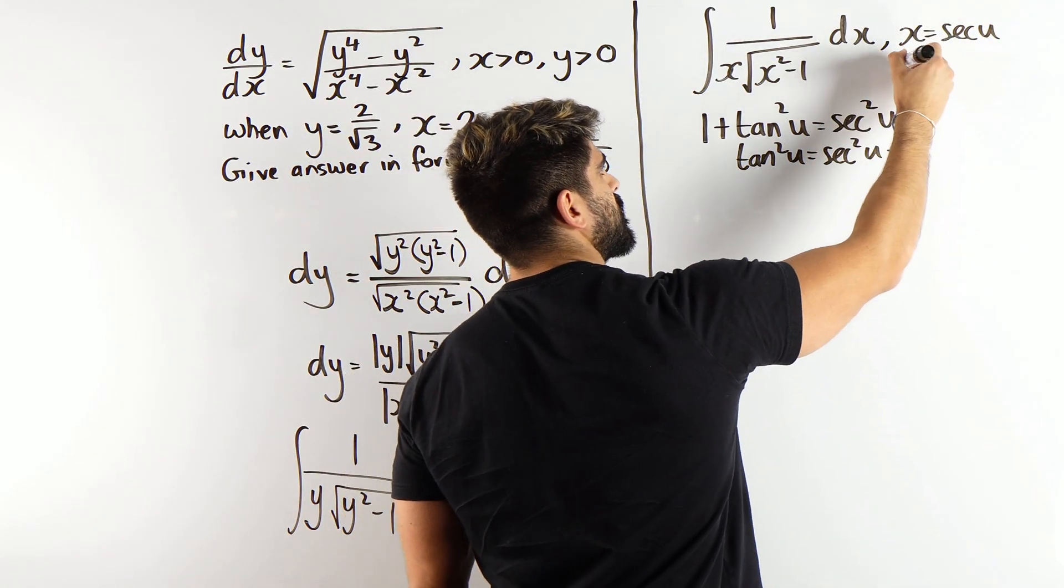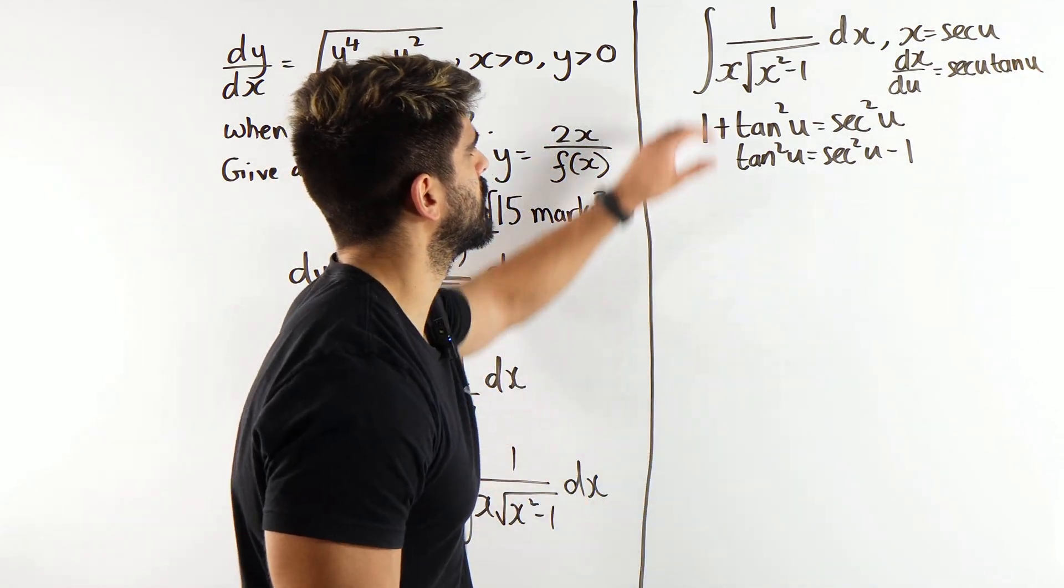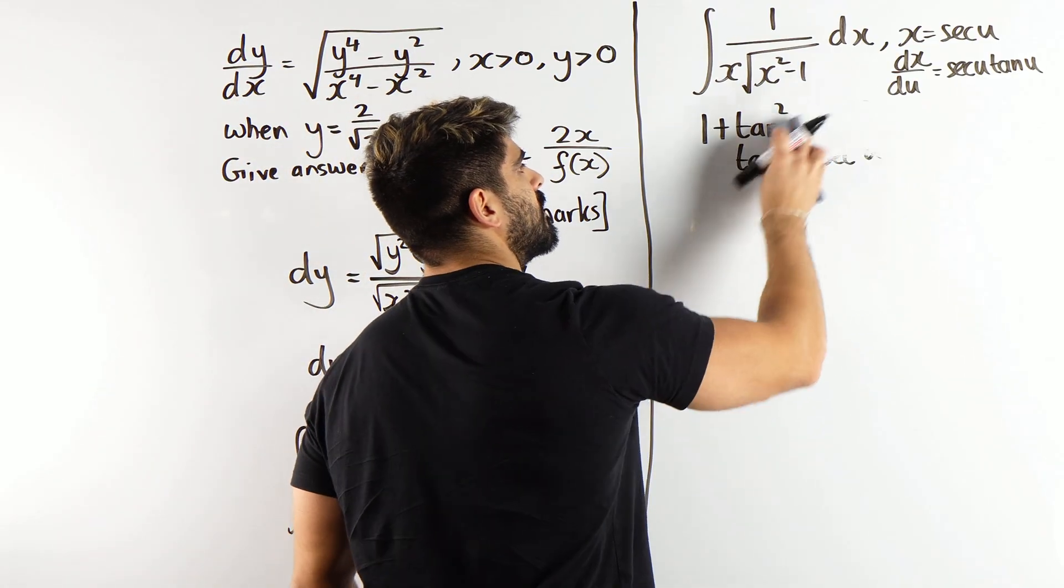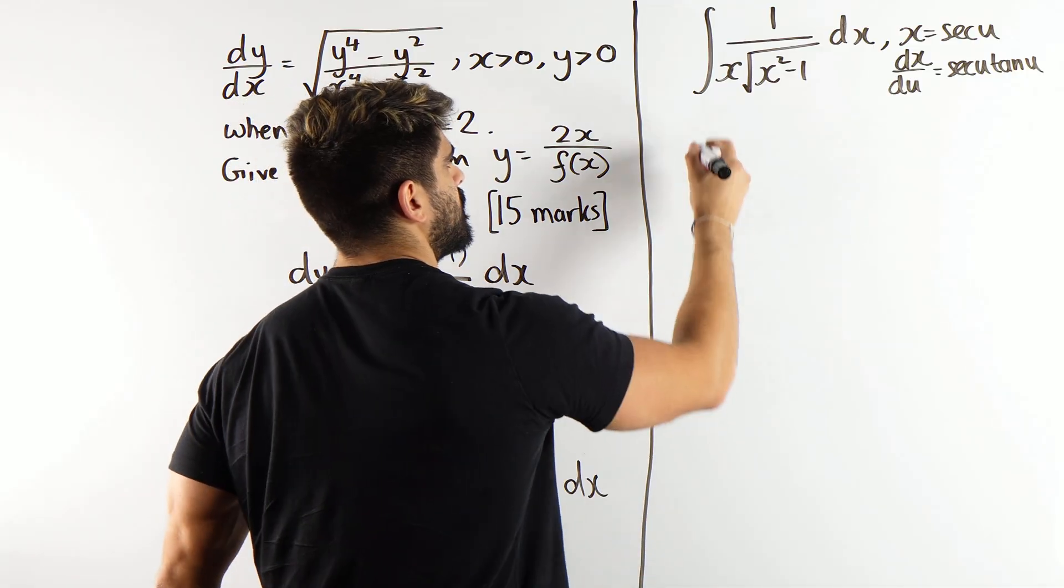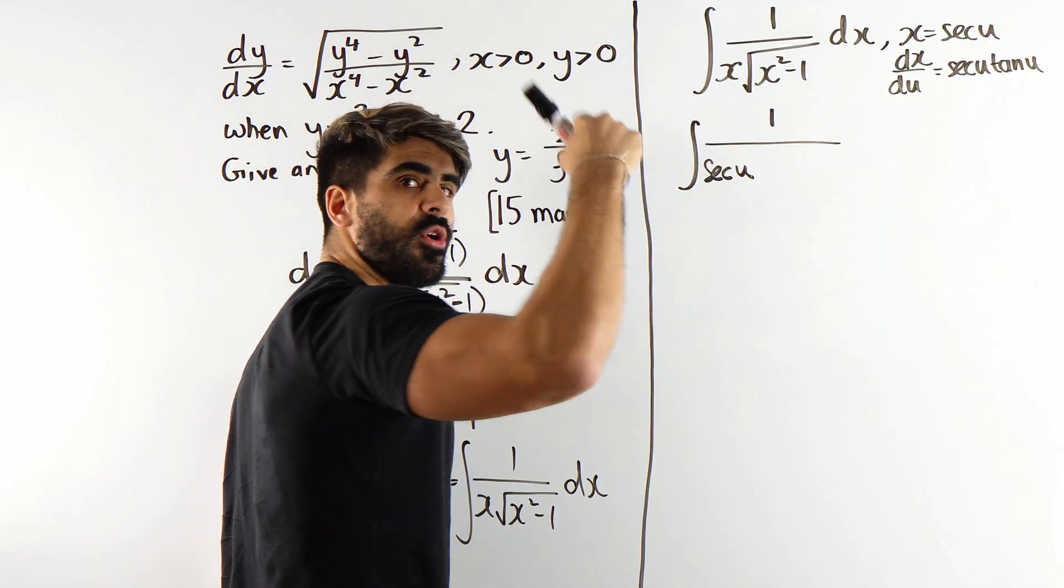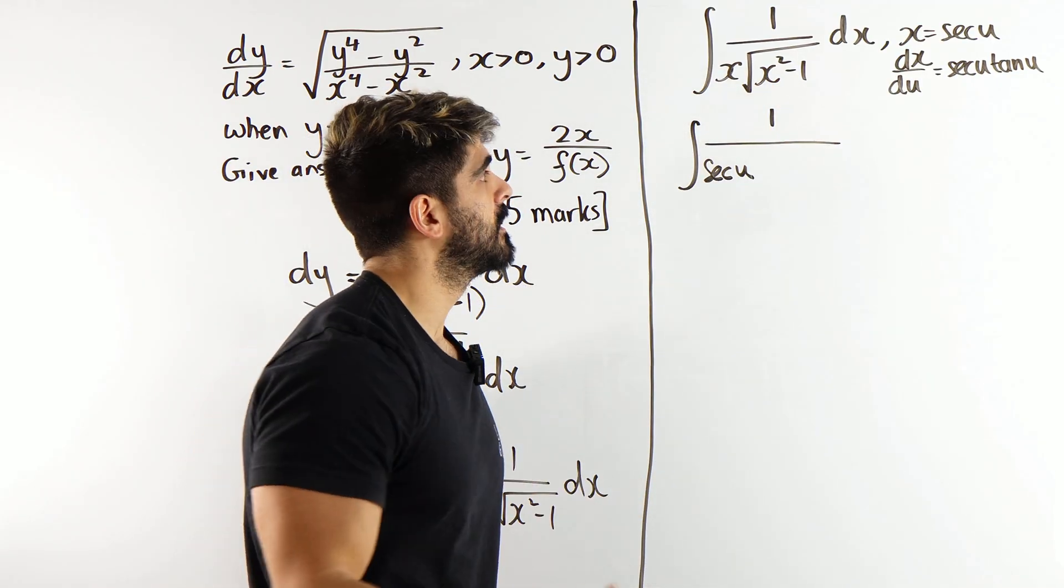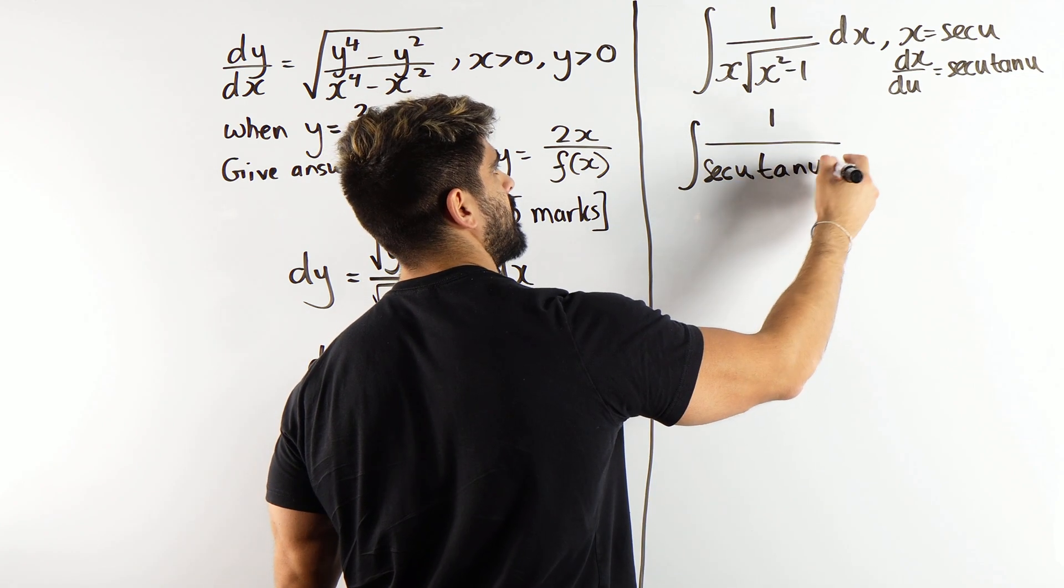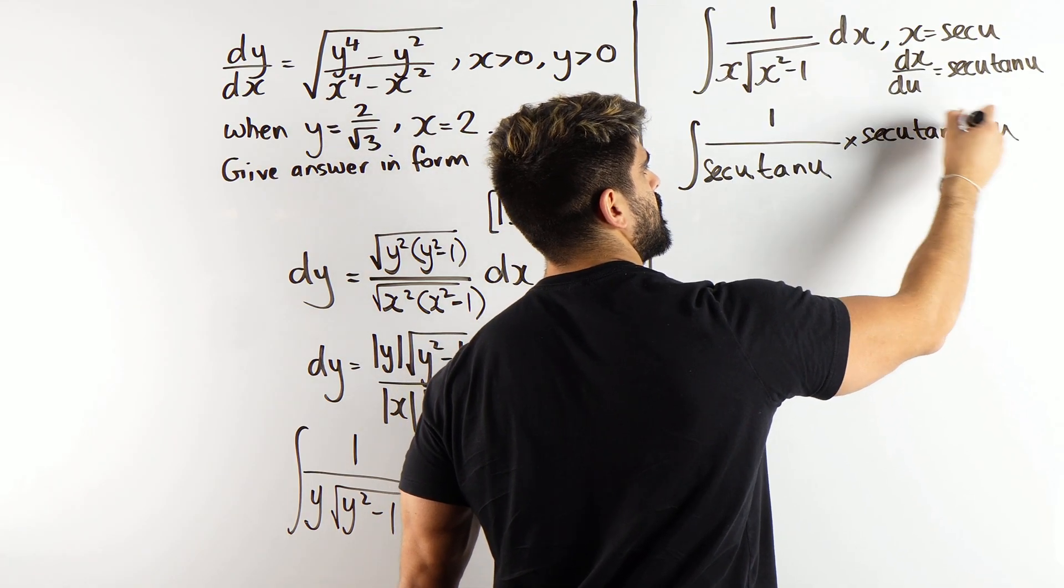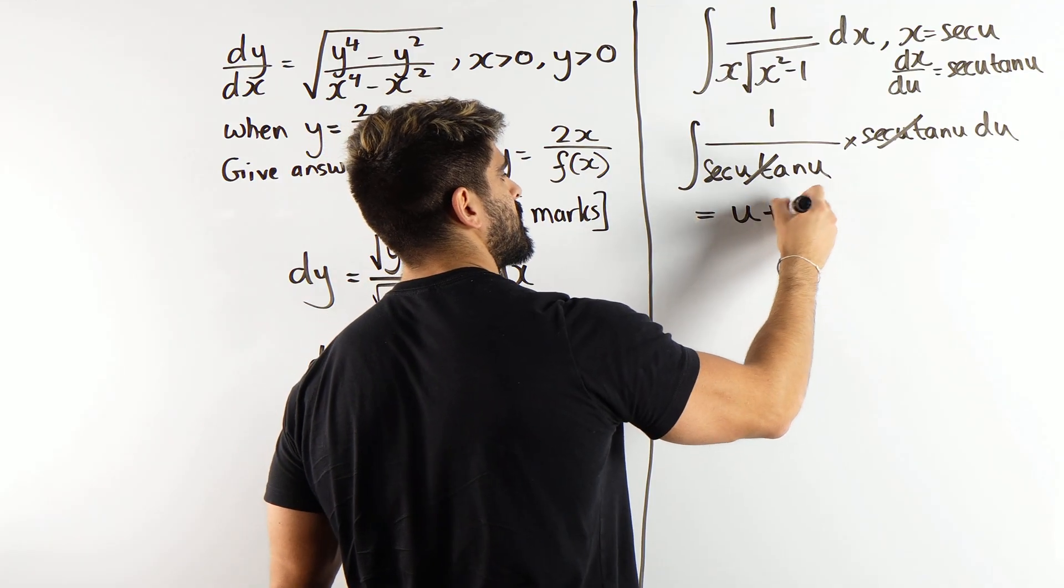Now, what is that identity I'm thinking about? 1 plus tan squared is sec squared. Because when you minus the 1 over, you get tan squared u is sec squared u minus 1. So, the substitution we're going to make is x equals sec u. Now, we have to change dx into du, so we're going to differentiate dx by du. In the denominator, we have the integral 1 over x, which is sec u.